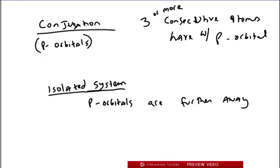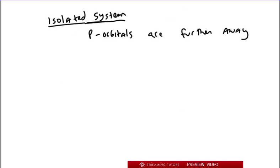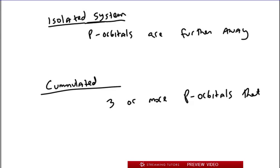Now, there's one more term that we need to know in terms of how p orbitals relate to each other. And this is called a cumulated system, cumulated. And the way this works is that there is no separation of the p orbitals for each atom. So each atom has no separation. So it's three or more p orbitals that are not separated by a sigma bond.